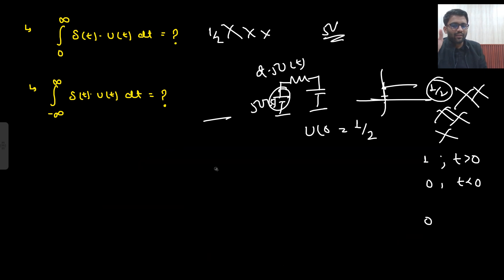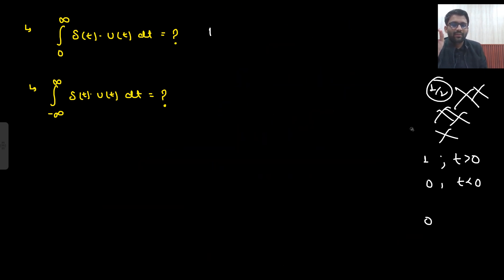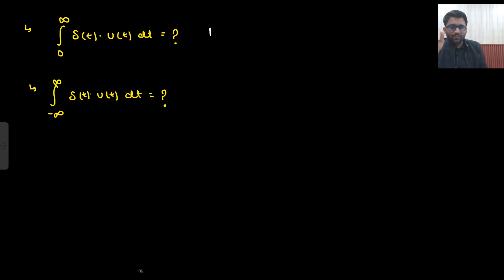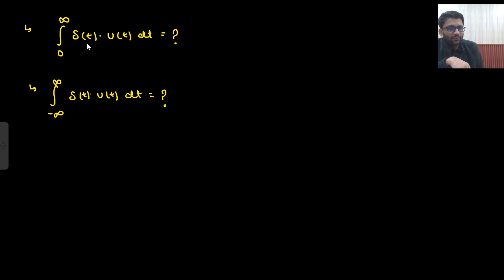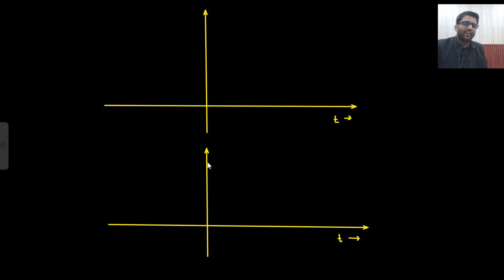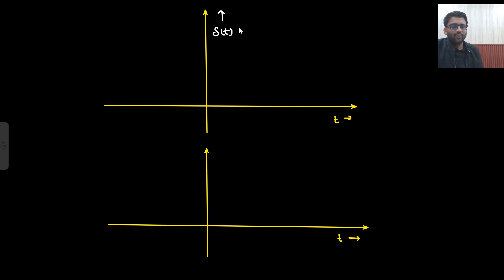Although I did not take a signal systems course, but this year I will take it, so at that time I will tell you more concepts. For now, let us see the solution of this particular equation. We will go by the basic definition. First I will draw the graph of δ(t), then I will draw the graph of the step function. How do you define the impulse function? Impulse function is made from a rectangular pulse function.